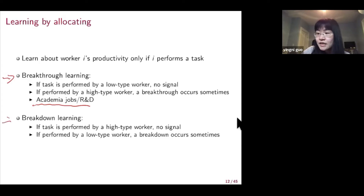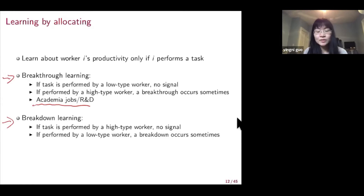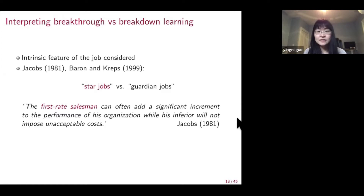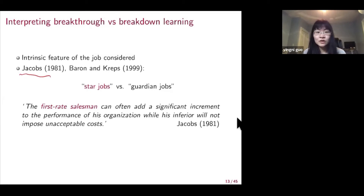The opposite is breakdown learning. Under breakdown learning, if the task is performed by a high type worker, nothing happens. But if the task is mistakenly assigned to a low type worker, a breakdown might occur. We can think about breakthrough versus breakdown learning as an intrinsic feature of the job or occupation we are considering. Based on the observation by Jacobs, Barron and Krebs coined the terms star jobs versus guardian jobs. Star jobs correspond to our breakthrough environment and guardian jobs correspond to our breakdown environment.